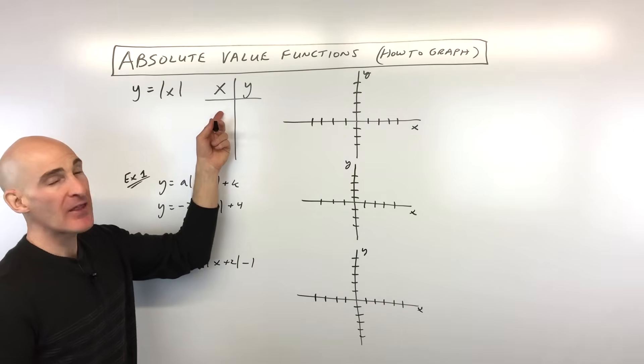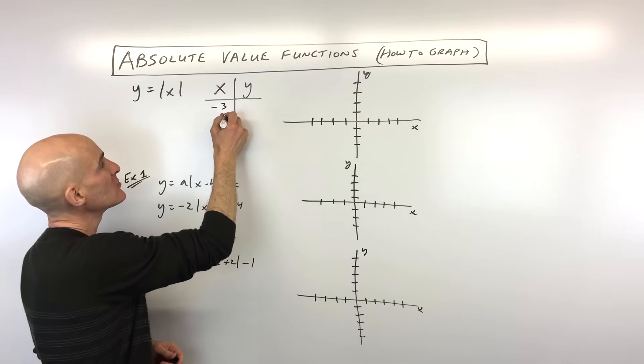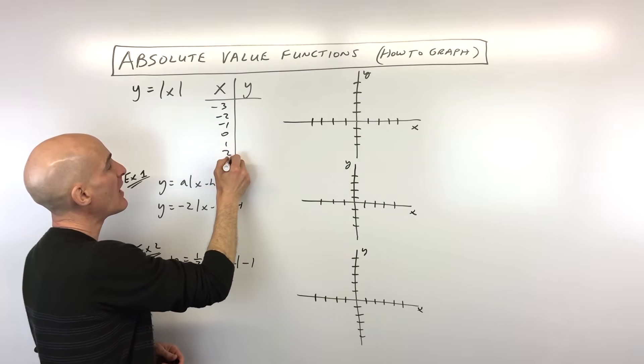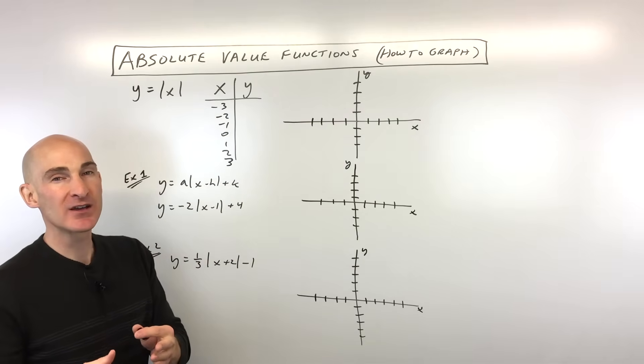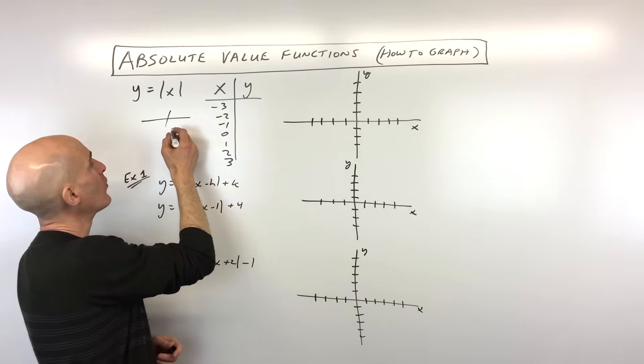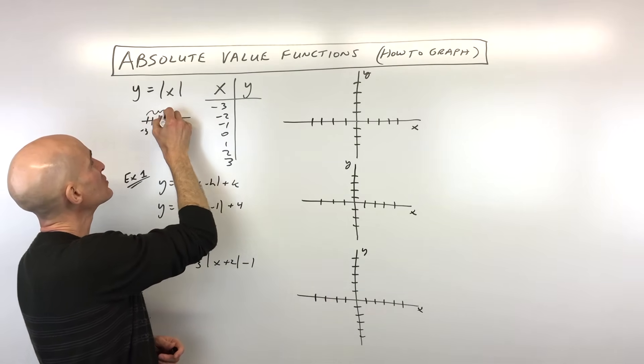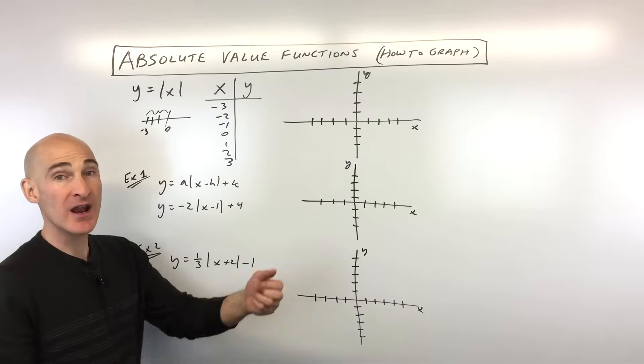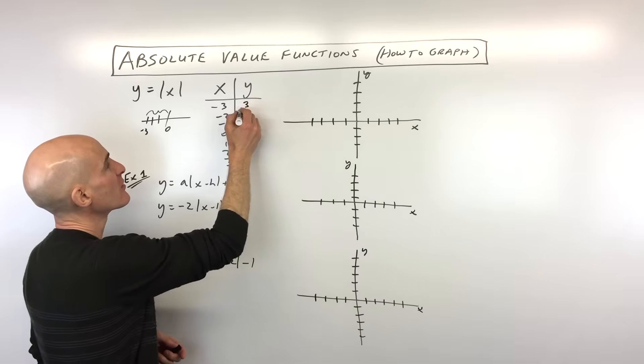So let's go ahead and plot the parent function, this basic function here, by picking some negative values and some positive values. When I put negative 3 in, the absolute value is really telling us what's that distance from 0. If you were to go on the number line, you can see here's negative 3. It's actually 3 units from 0. Granted, it's 3 to the left, but that distance is always positive. So this is going to be 3.